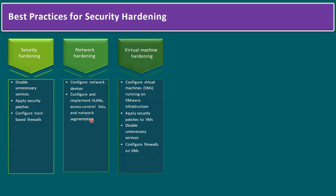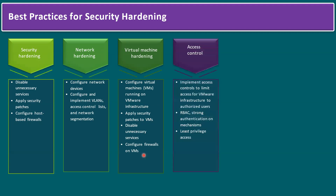For virtual machine hardening in a VMware infrastructure: apply security patches to VMs and disable unnecessary services. VMware recommends avoiding virtual machine console access in production environments — access should be through RDP for Windows servers and SSH for Linux servers. Configure firewalls on virtual machines based on the guest operating system. Commonly used OSes include Windows, Linux, Solaris, and OVF-format pre-configured OSes such as Photon.